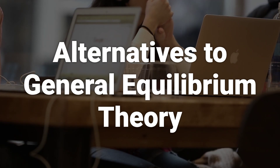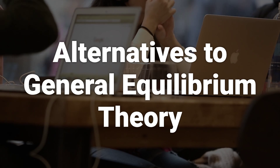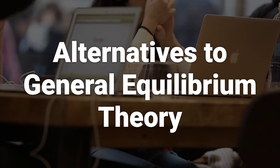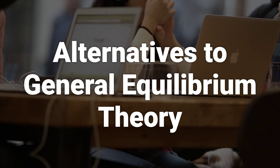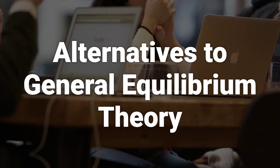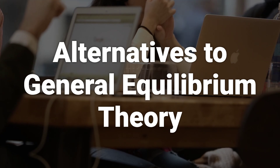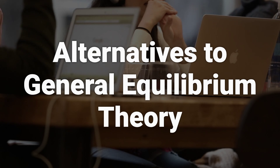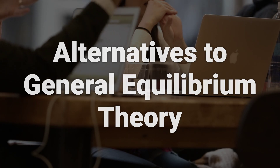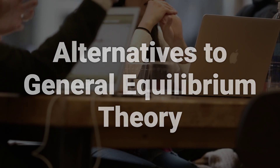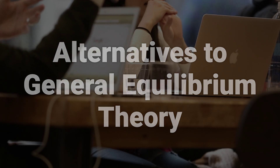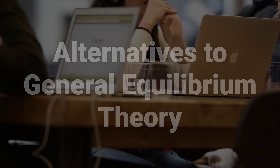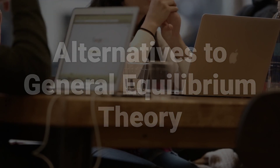Another Austrian economist, Ludwig Lachmann, argued the economy is an ongoing, non-stable process replete with subjective knowledge and subjective expectations. He argued that equilibrium could never be mathematically proven in a general or non-partial market. Those influenced by Lachmann imagine the economy as an open-ended evolutionary process of spontaneous order.